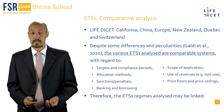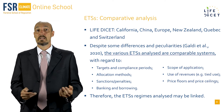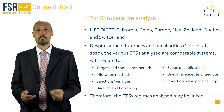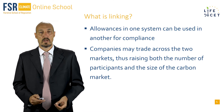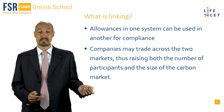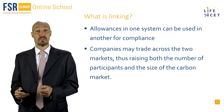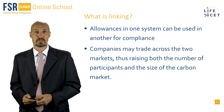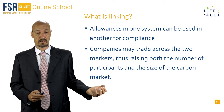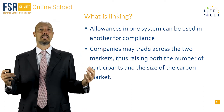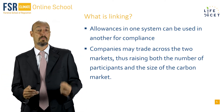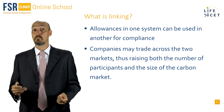Given these similarities, these ETSs might be linked in principle. But what do we mean by linking? Linking occurs when allowances in one system can be used in another system for compliance purposes, so that companies may trade across the two markets, thus increasing the dimension of the market both in terms of number of participants and emissions being covered.